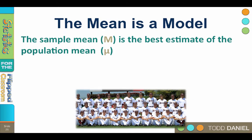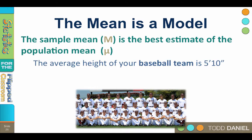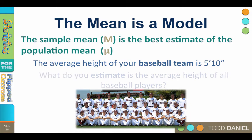Let me explain what I mean when I say that the mean is a model. The mean of the sample, m, is always the best estimate for the mean of the population, mu, from which the sample was drawn. The mean of the sample becomes our model for the population. So say that you measure and find out that the average height of your baseball team is 5 foot 10. With only that information, what do you estimate is the average height of all baseball players? Your best estimate of the population mean is your sample mean: 5 foot 10.